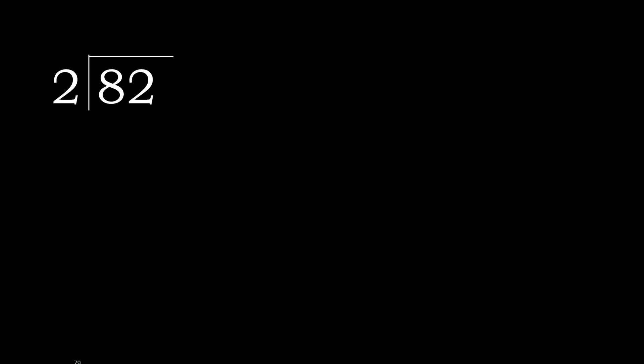82 divided by 2. 8 is not less, therefore with 8: 2 multiplied by which number is nearest to 8 but not greater? 2 multiplied by 5 is 10, which is greater. 2 multiplied by 4 is 8, which is not greater. 8 minus 8 is 0.